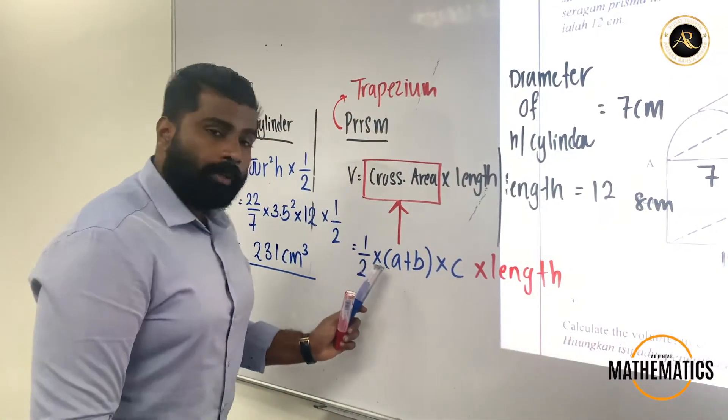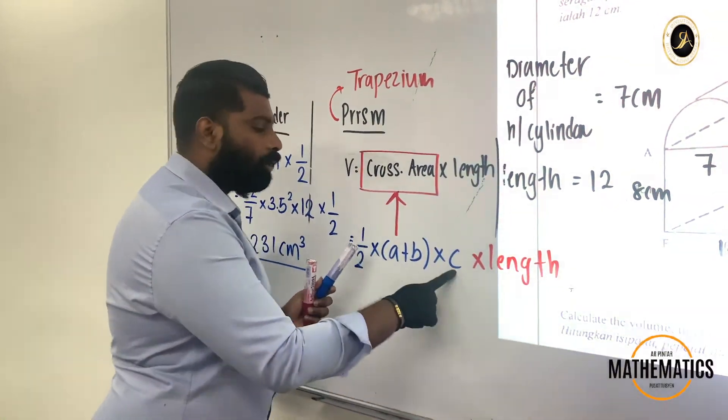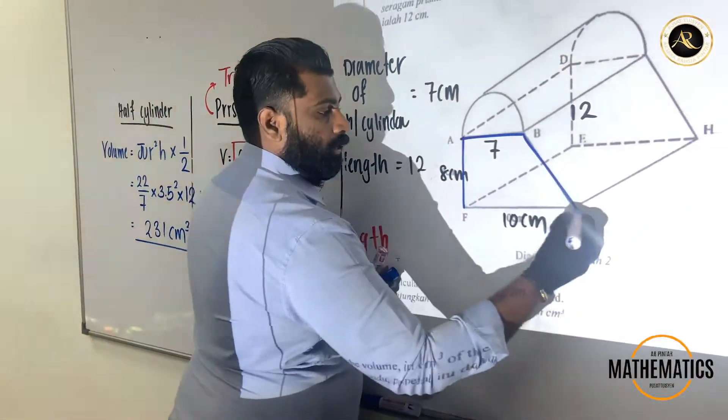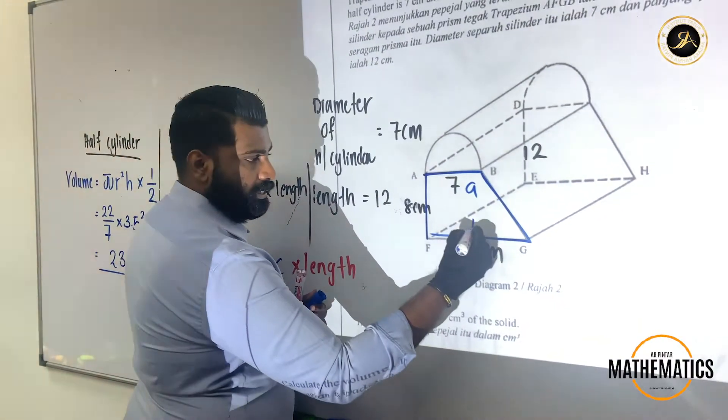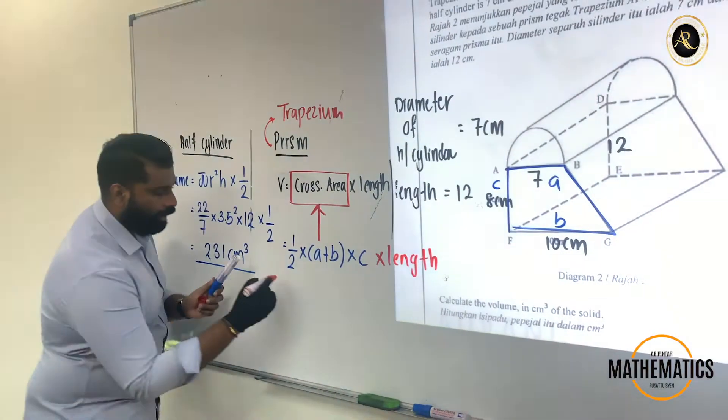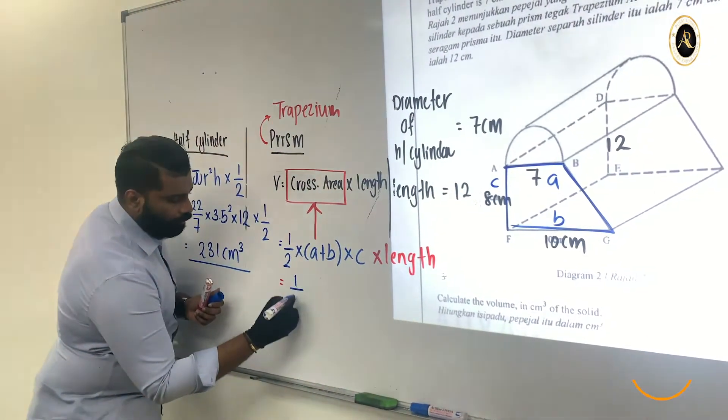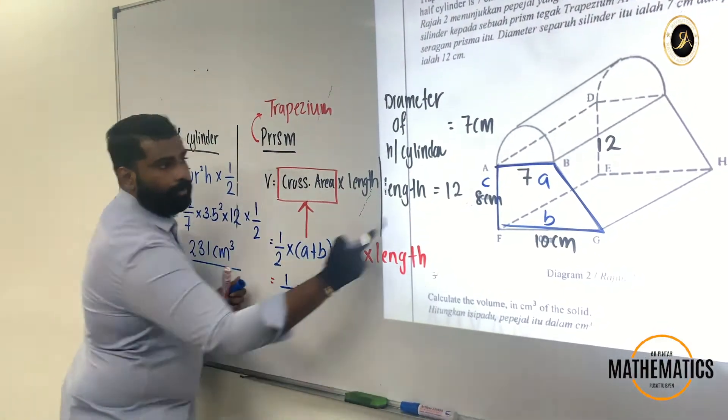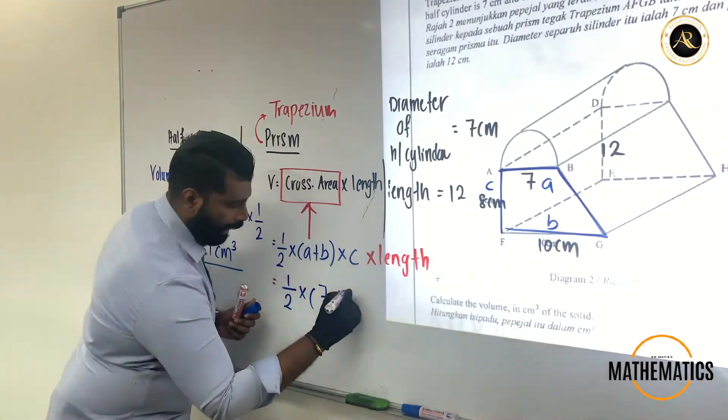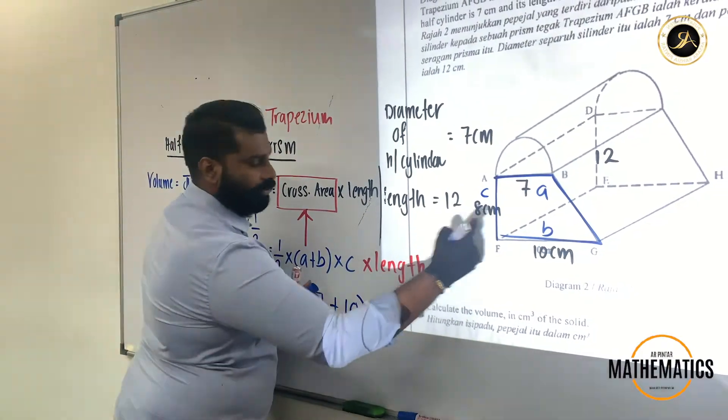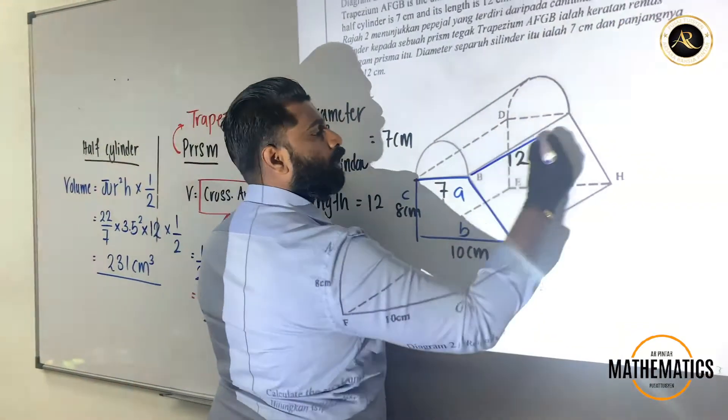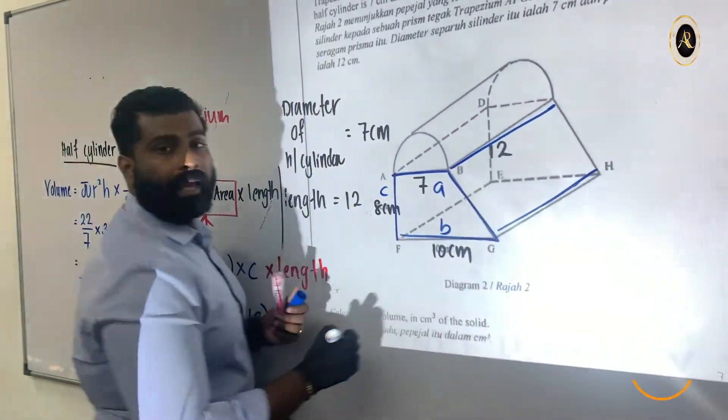Which one is representing my A, which one is representing my B, which one is representing my C? You can see here. This is my A, this is my B, this is my C. So 1 over 2 times A. My A is representing 7 plus what is my B? 10. And then what is my C? 8. Then what happened to my length? If you notice here, this is what we consider length. So my length will be 12.